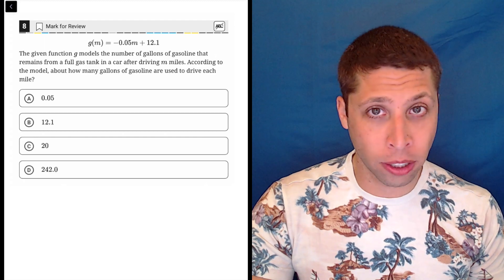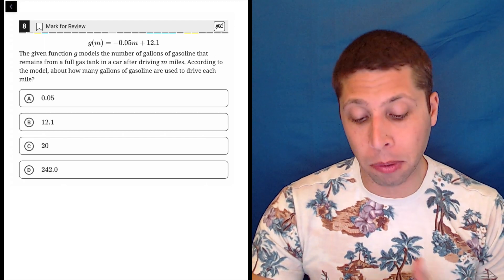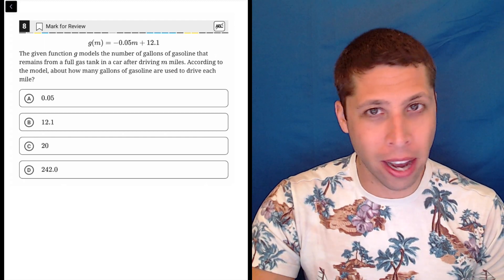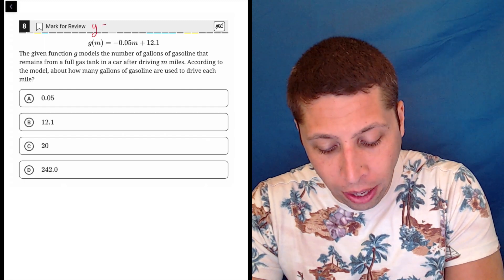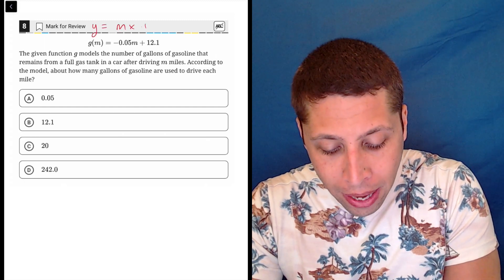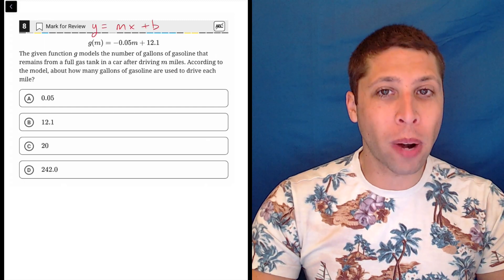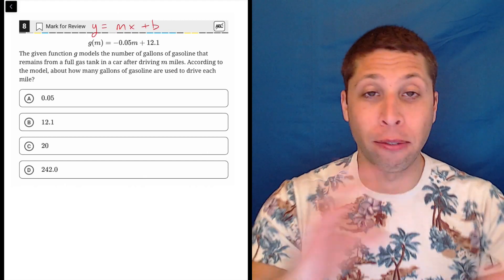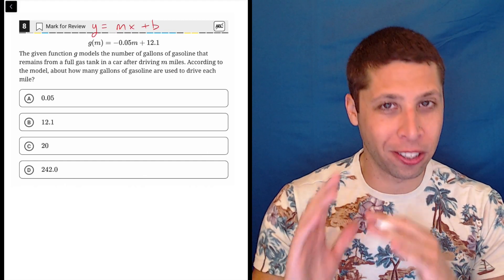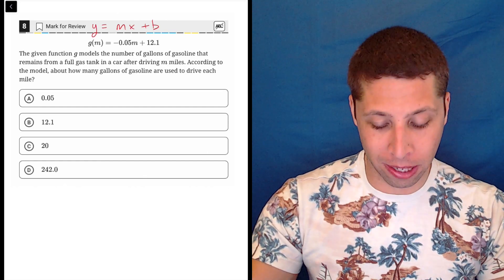We're given a function, looks maybe a little scary, we've got a decimal, we've got a negative, g of m, what is that? Doesn't matter. Basically, remember, this is a line, y equals mx plus b. You should be able to recognize that it kind of fits that format. They've swapped some of the letters, but it's still kind of hitting that same basic formula.